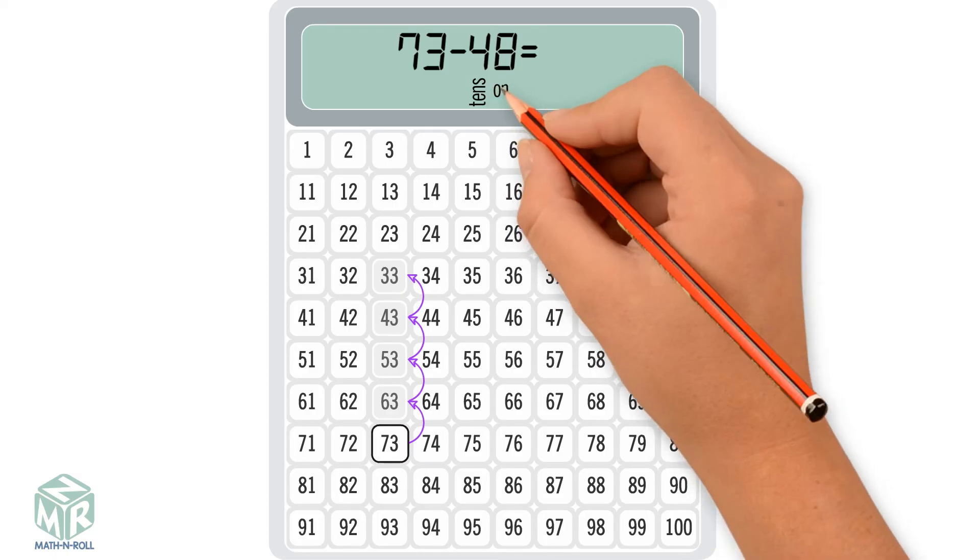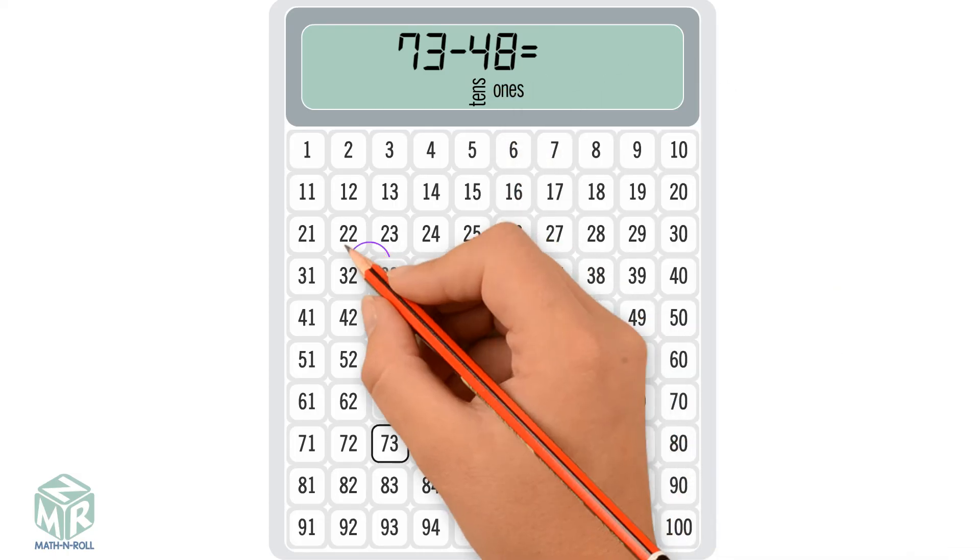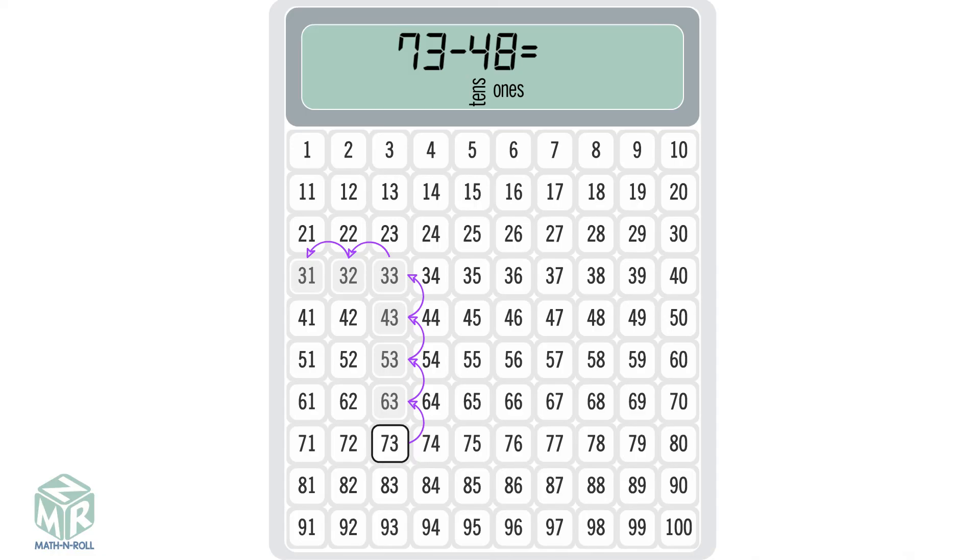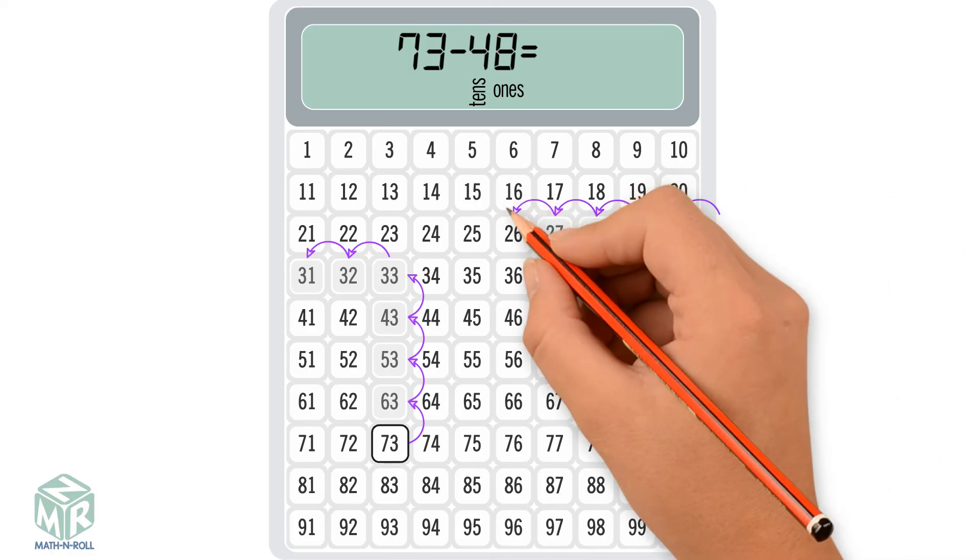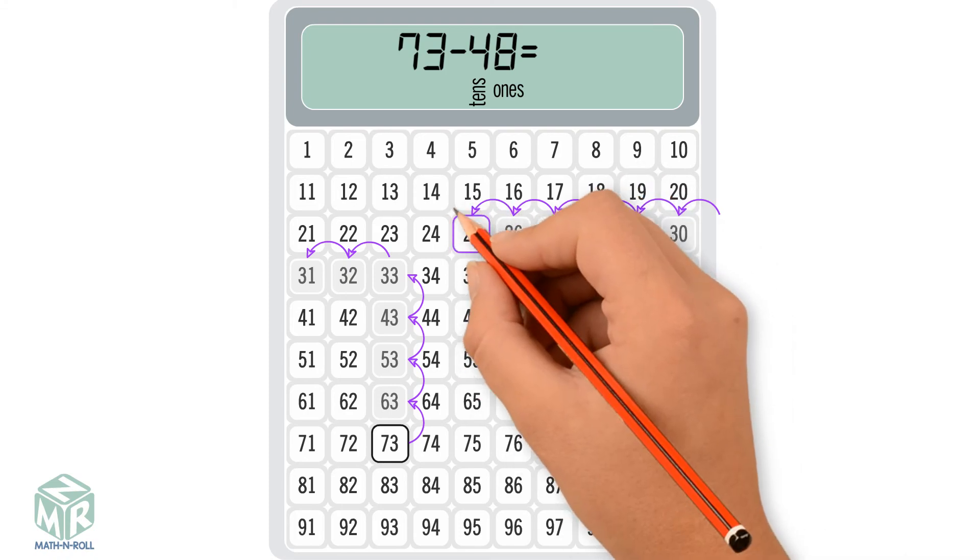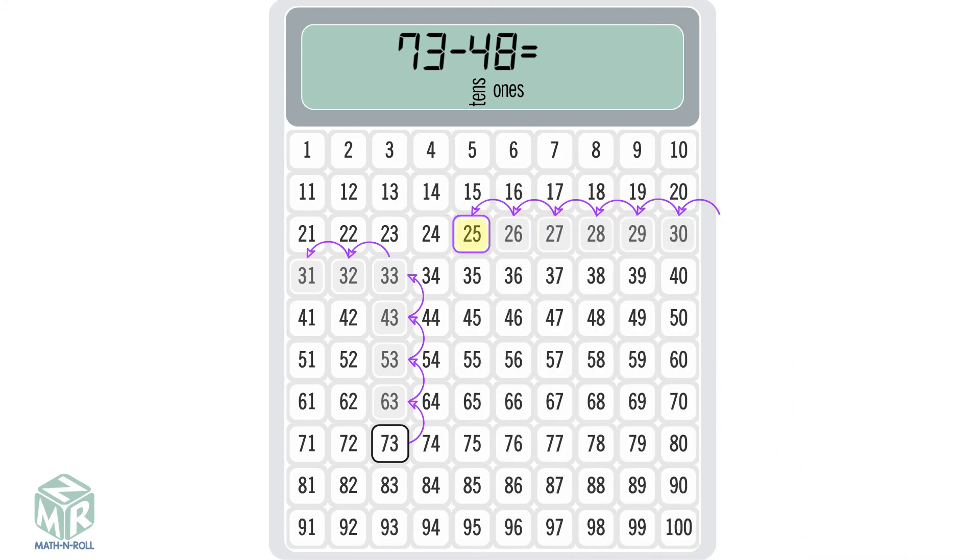48 has 8 ones. Continue at 33 and move left, or subtract 8 ones onto the next row. We get 25, so 73 minus 48 equals 25.